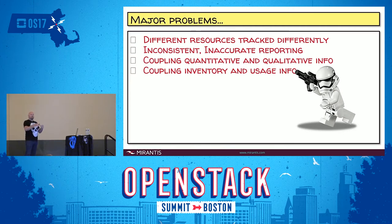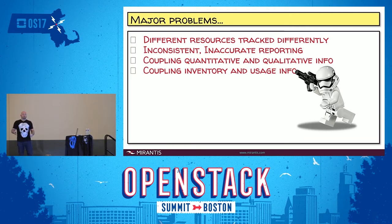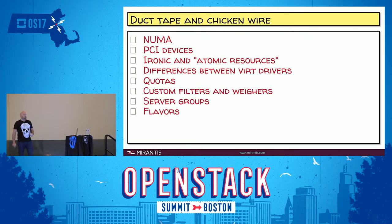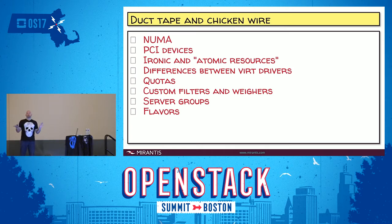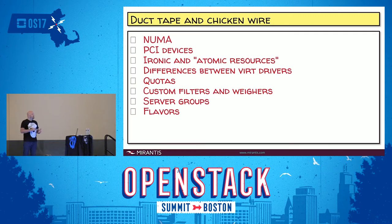In addition to coupling quantitative and qualitative stuff together, we've also coupled inventory or capacity type information with usage information for some types of resources. All of those problems have led to duct tape and chicken wire solutions all over Nova. Some areas are most messy, but it's more just the inconsistency that is the issue.